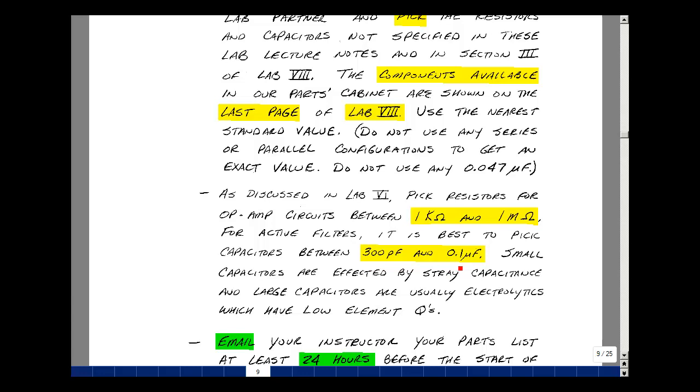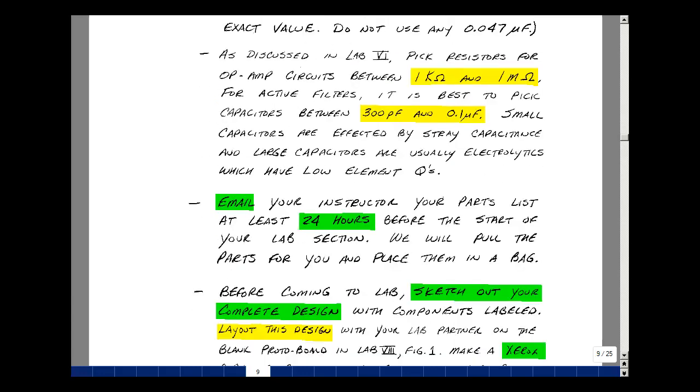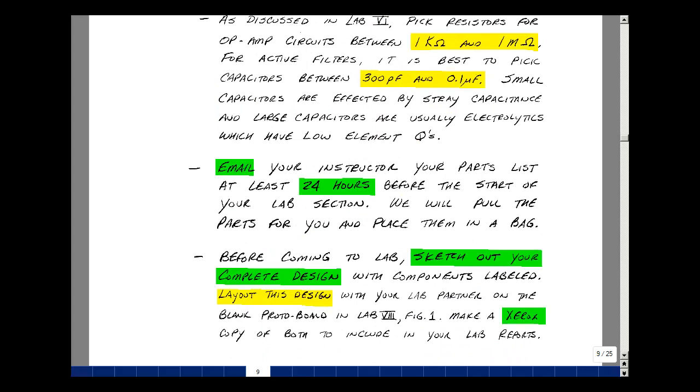On the upper end, I'd like to stay below 0.1 microfarad capacitors because these tend to have the polyester film dielectric. These have very high element cues and look like an ideal capacitor. When you go above this, you begin to get into electrolytic capacitors, which have fairly low values of element cue and cause errors in the bandpass filter. After you meet with your lab partner and pick the component values, I'd like you to email your instructor the part list at least 24 hours before the start of this lab. This will allow your TA to pull the parts for you and place them in a bag. Before you come to lab, I'd also like you to sketch out your complete design with the components labeled. You can find a blank protoboard in Lab 8 in Figure 1. I'd like you to lay this out with your lab partner and make a copy and bring that to lab.